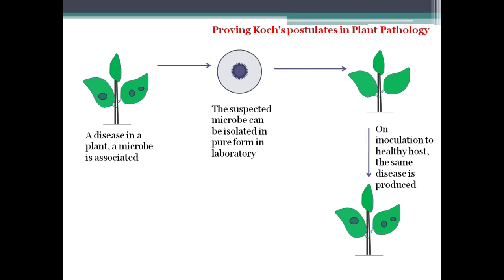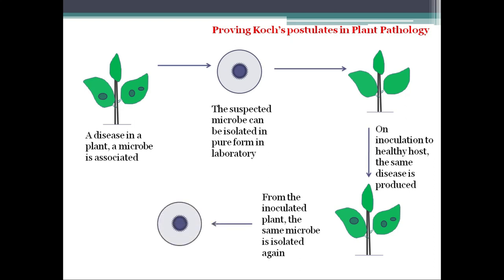The fourth condition, given by E.F. Smith, states that from the inoculated plant the same microbe must be isolated again. We isolate the same microbe again from the inoculated plant. This proves that the first isolated microbe is really the causal organism of the disease in question. All conditions are thus fulfilled.